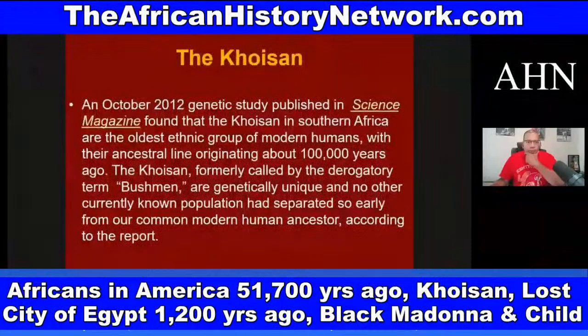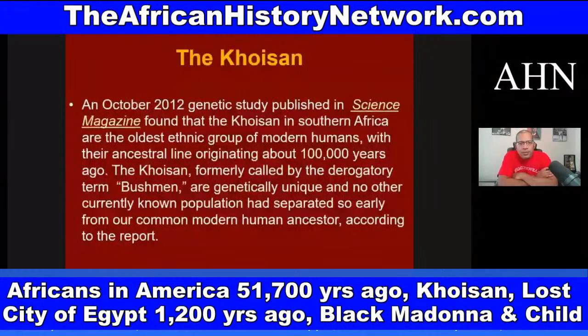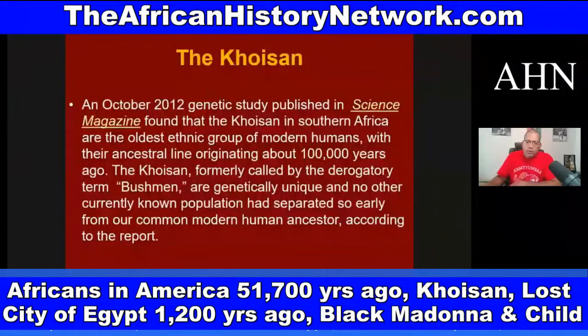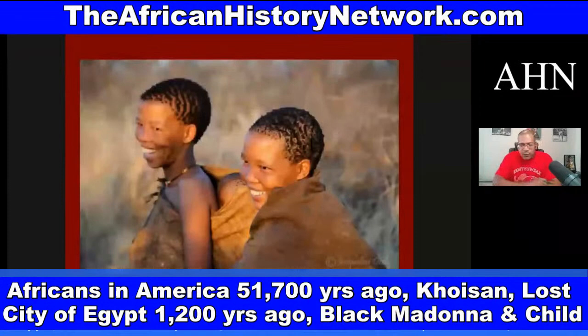A genetic study published in Science Magazine in October 2012 found that the Khoisan in southern Africa are the oldest ethnic group of modern humans, with their ancestral line originating about 100,000 years ago. The Khoisan — formerly called by the derogatory term 'Bushman' — are genetically unique, and no other currently known population had separated so early from our common modern human ancestor, according to the report.